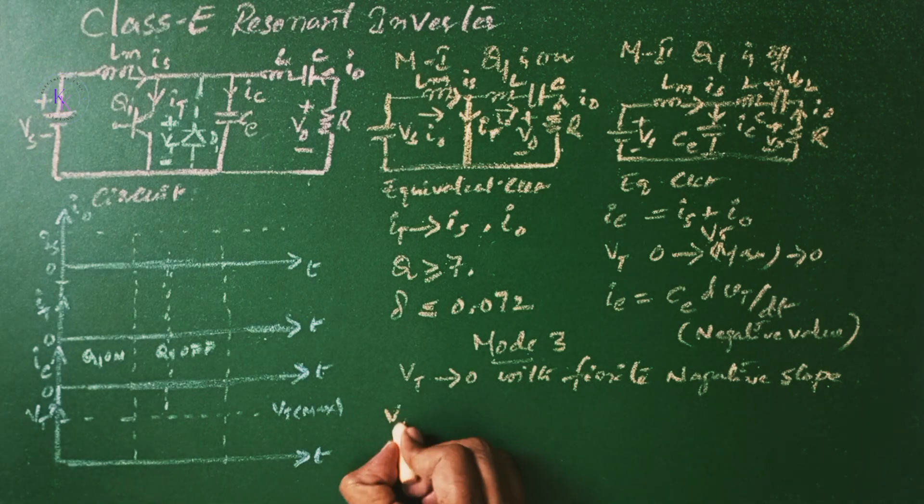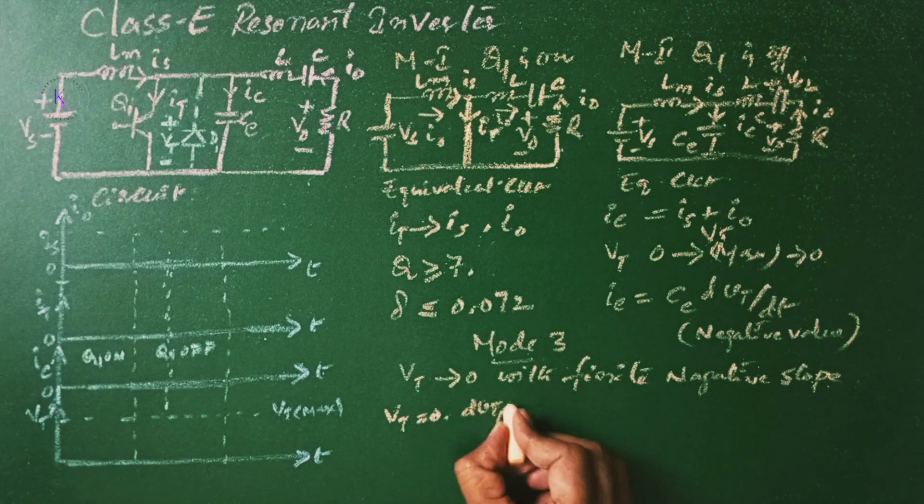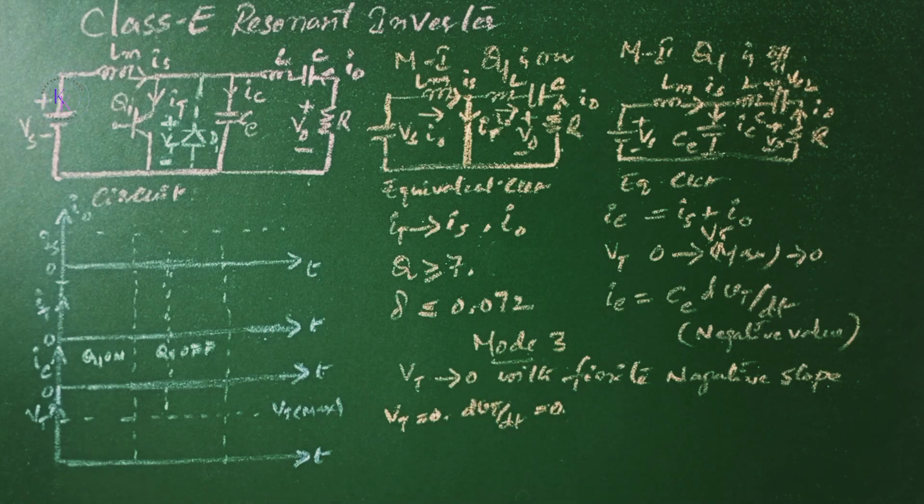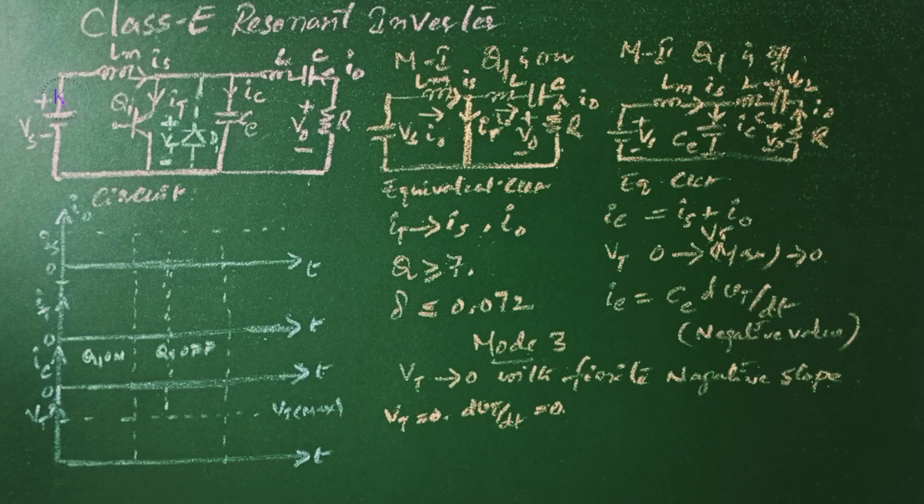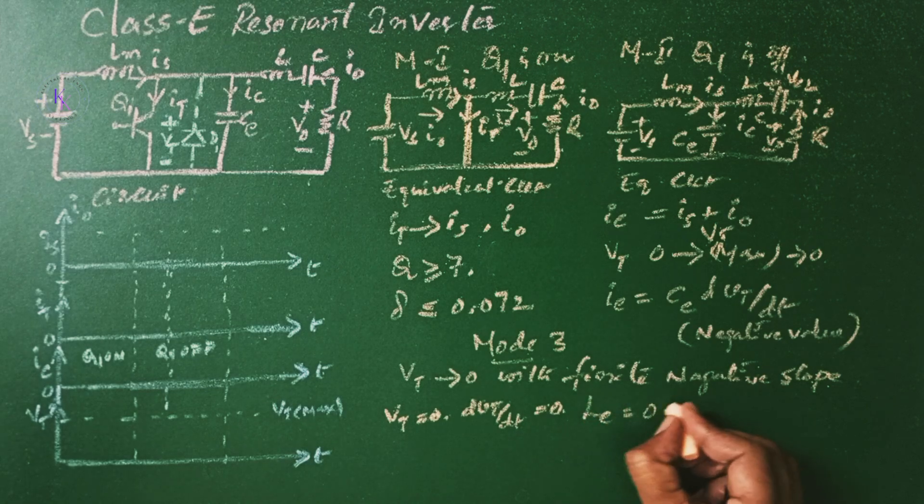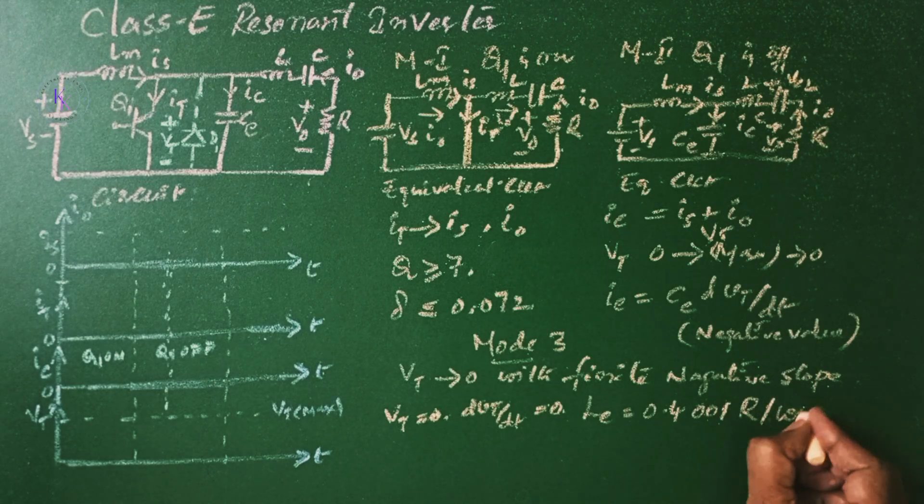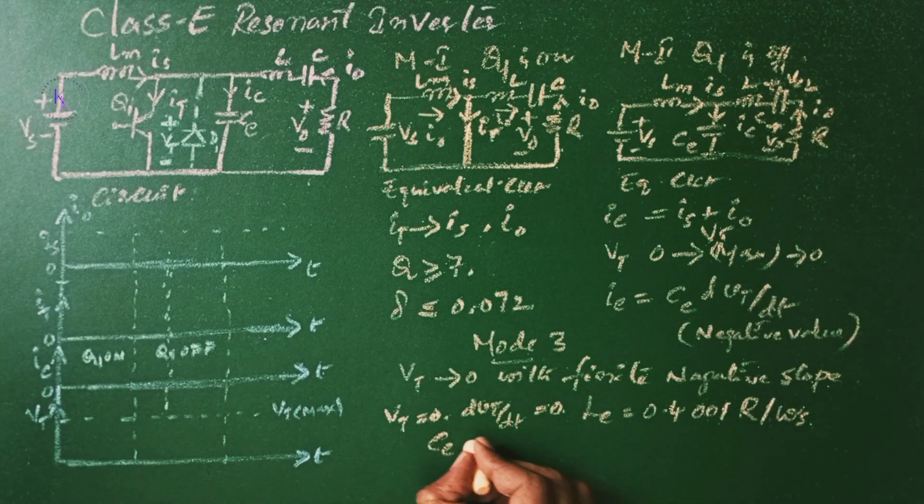That is VT equals 0 and dVT by dt equals 0. Then the optimum parameters that usually satisfy these conditions and give maximum efficiency will be LE equals 0.4001R divided by omega s, and CE equals 2.165 divided by R omega s.